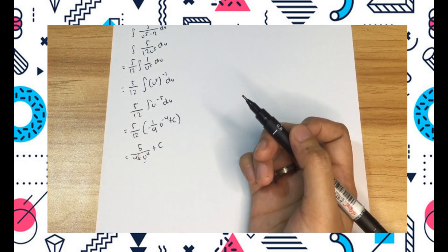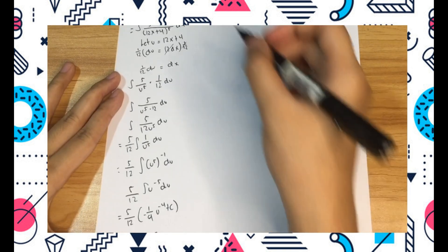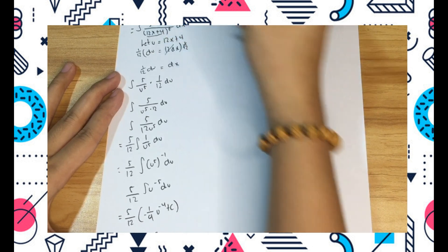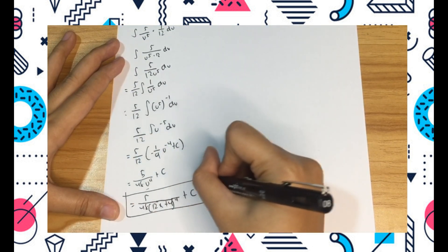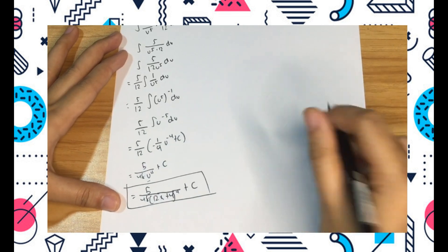We're almost done. Replace all u with the x term. Replace u back with what we had at the beginning, which is 12x plus 4. That is now the final answer.